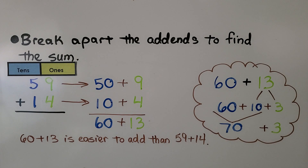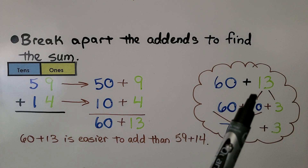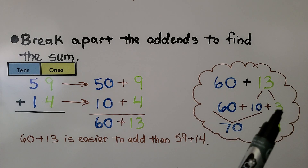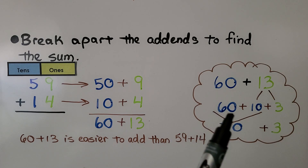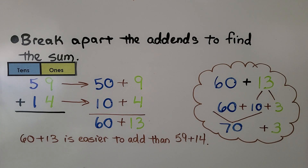We add the ones: 9 plus 4 is equal to 13. Now we have 60 plus 13. The 13 is a 10 and 3 ones. We add 60 plus that 10 to get 70, then add the 3 ones left over. 59 plus 14 is equal to 73.